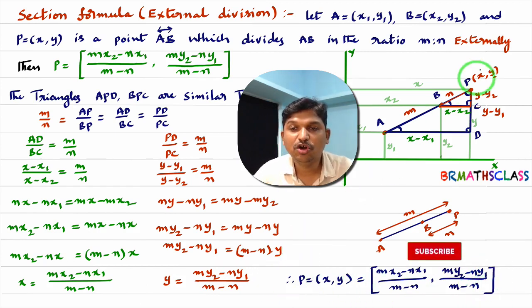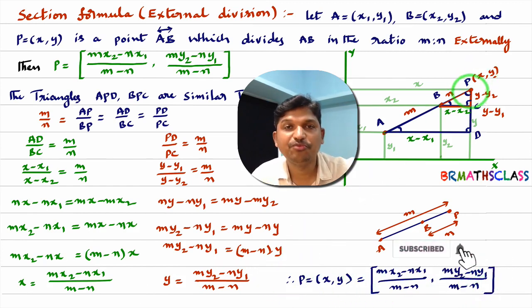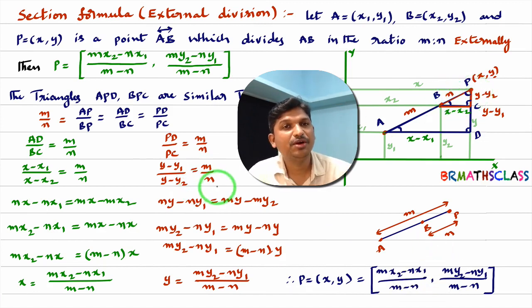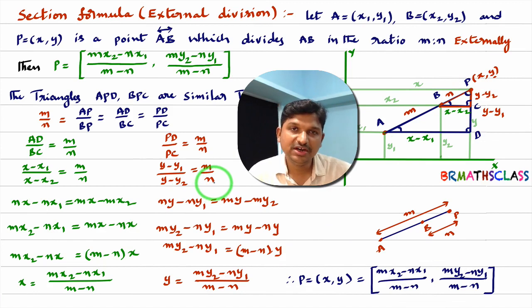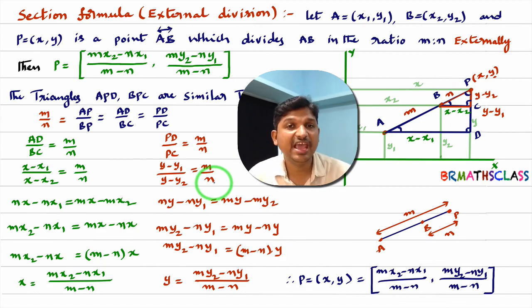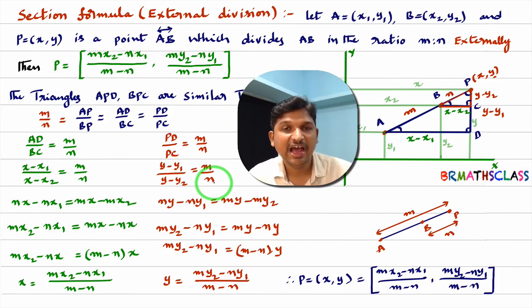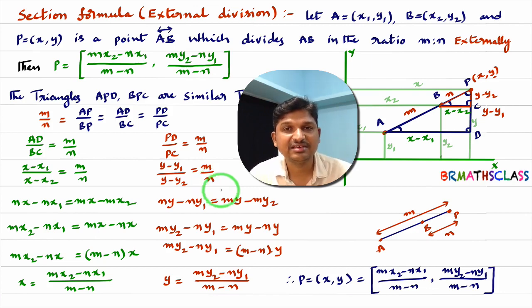Finally, we conclude: point P is (x, y) where x equals (Mx2 minus Nx1)/(M minus N) and y equals (My2 minus Ny1)/(M minus N). So the section formula is all about finding the coordinates of a point which divides AB in the ratio M:N internally or externally. I hope you understand this class.